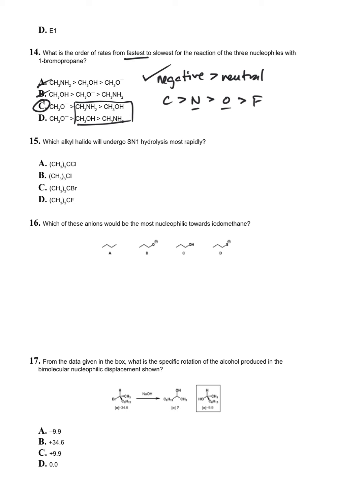Question fifteen: which alkyl halide will undergo SN1 hydrolysis most rapidly? Essentially, this is a series of tert-butyl halides. Iodide is going to be the best one. This is B. Again, I is greater than Br, is greater than Cl, is much greater than F.